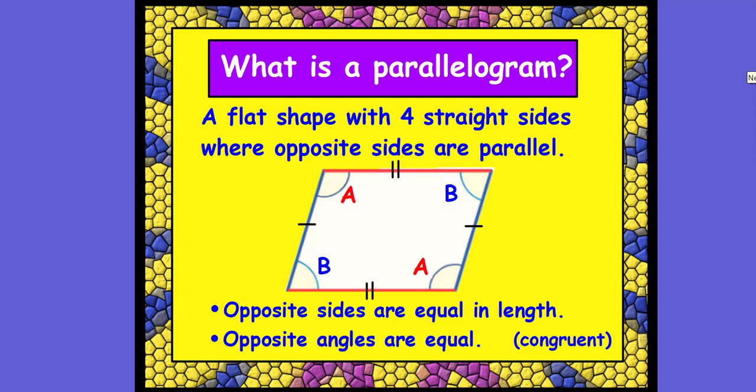What is a parallelogram? A parallelogram is a flat shape with four straight sides where opposite sides are parallel. Again, I'm looking at these. I see the two L's are parallel. So this line is parallel to this line. And this line is parallel to this line. The opposite sides are equal in length and the opposite angles are equal. So they are congruent. This side is congruent to this side. This side is congruent to this side in a parallelogram.